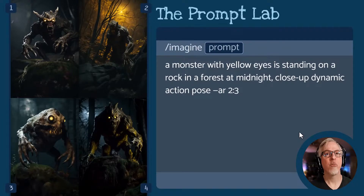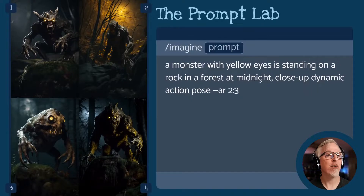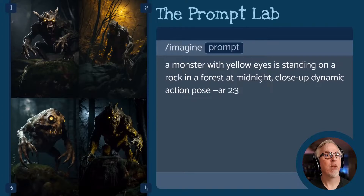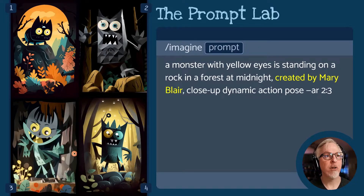As you can see, these four images really did give us what we were asking for: a monster with yellow eyes, standing on a rock in a forest at midnight. The camera's relatively close and the character is in an interesting pose. By saying 'close-up dynamic action pose,' we get something a little more interesting and unique — rather than the typical portrait style with hands at the sides you see in the community feed. Now, let's add in Mary Blair. Quite a change, right? We see the hallmarks of Mary Blair's style: saturated colors, loose illustrated style, simple shapes, diagonals and patterns. This looks fantastic.